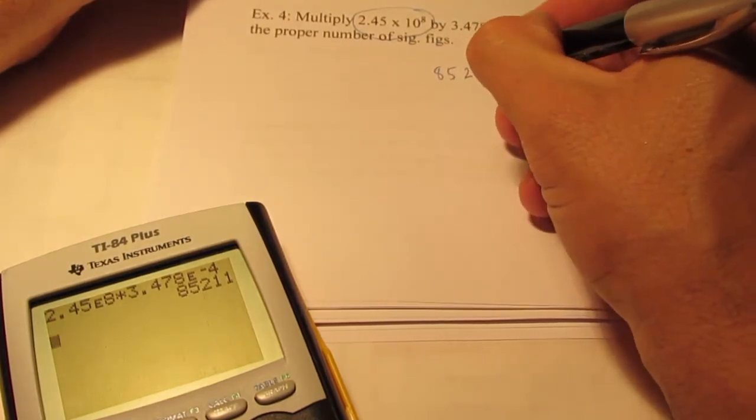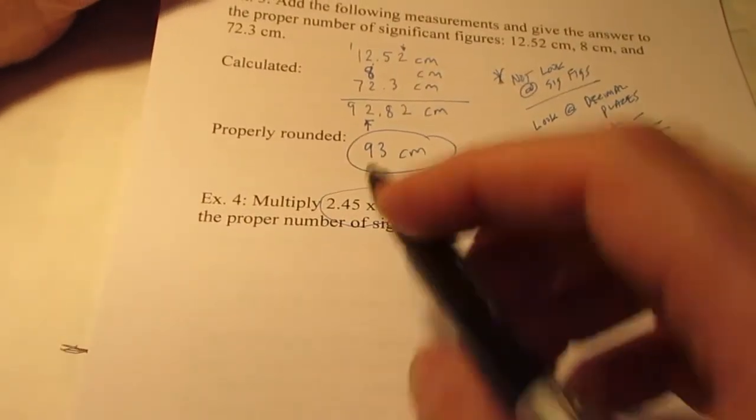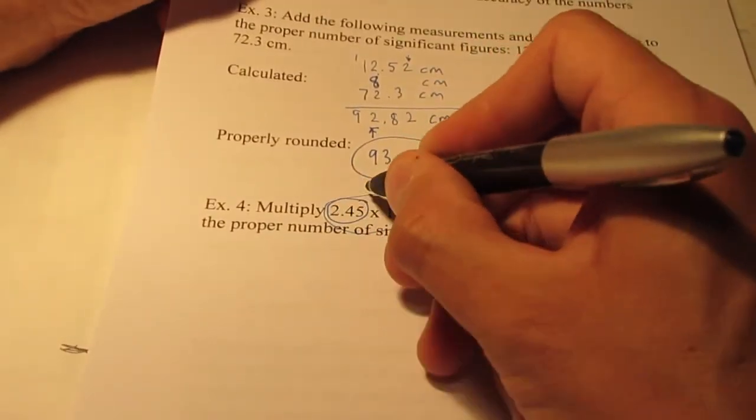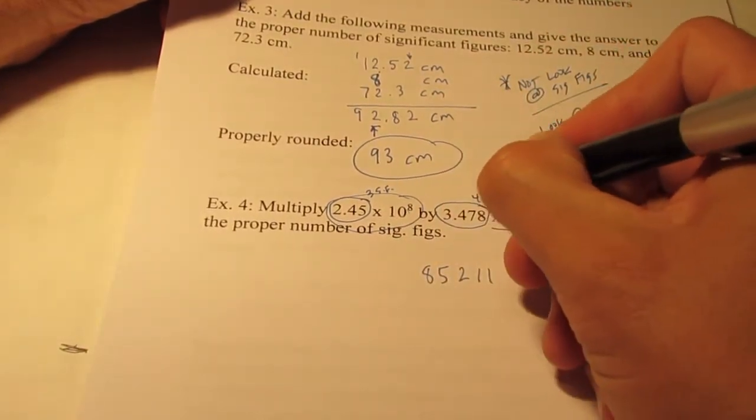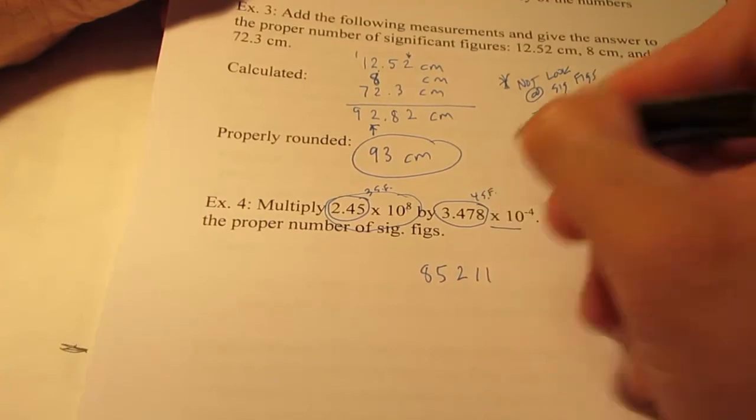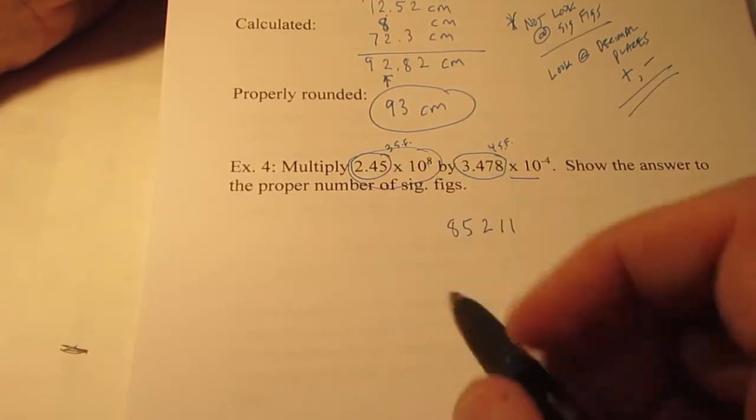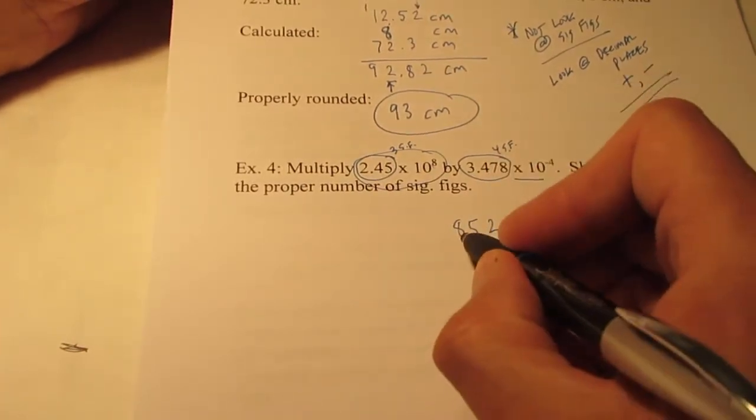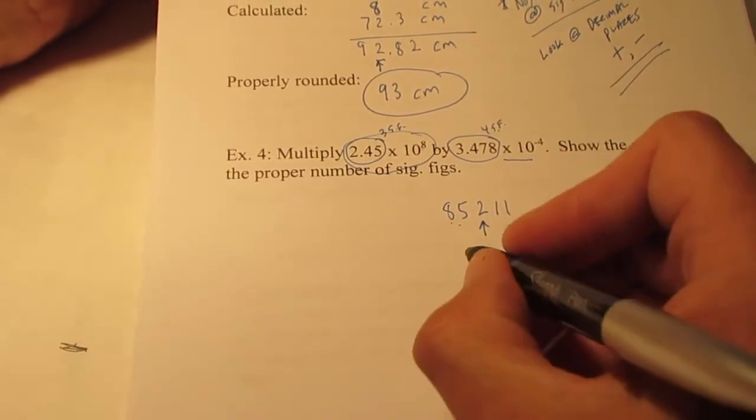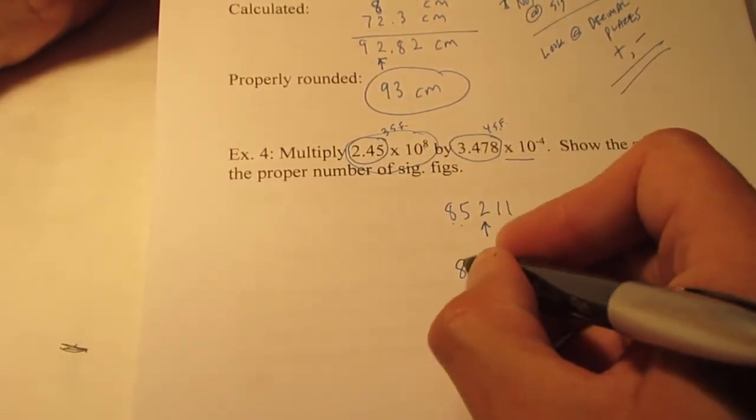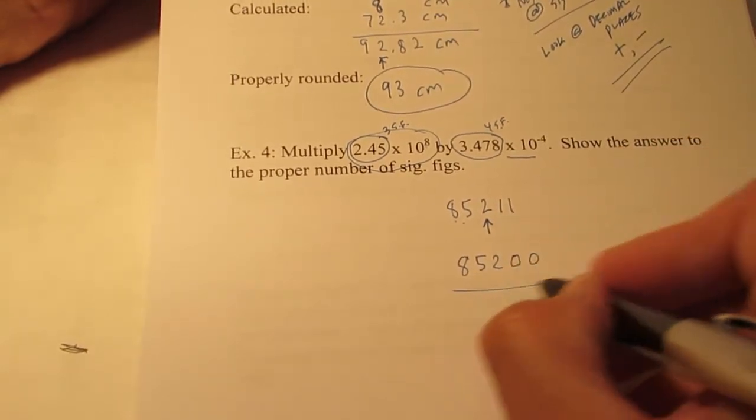85,211. So I'm multiplying here, so I'm going to look at sig figs. This measurement has 3 sig figs. This measurement has 4 sig figs. So I have to go with the one that has the least number of sig figs, 3. So I count over 3 from the left: 1, 2, 3, and I round off right here. So 85,211 rounded off to 3 digits is 85,200.